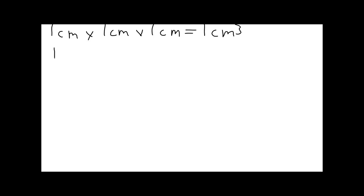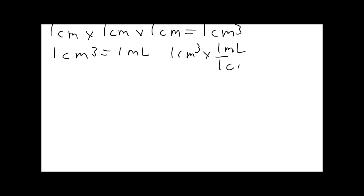Then we have our conversion factor, which states one centimeter cubed equals one milliliter. With that conversion factor, we set up a multiplication where we have one centimeter cubed times one milliliter on top and one centimeter cubed on the bottom. We want one milliliter on top and one centimeter cubed on the bottom so that our units cancel out. Centimeters cubed cancels with centimeters cubed, and we're left with units of milliliters.